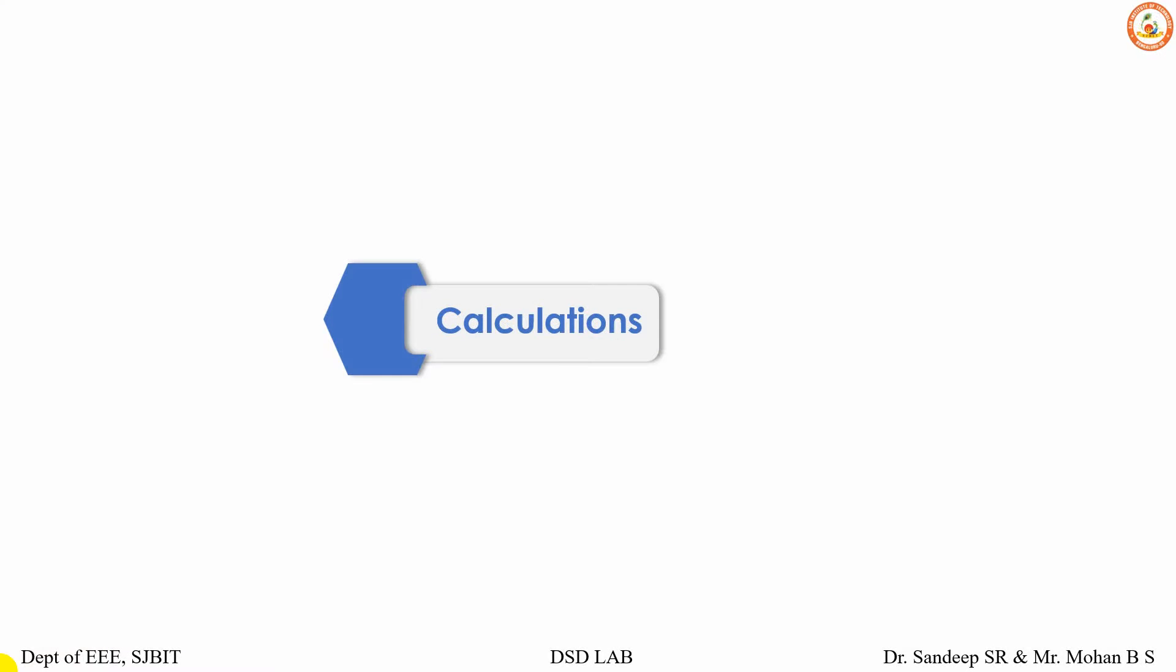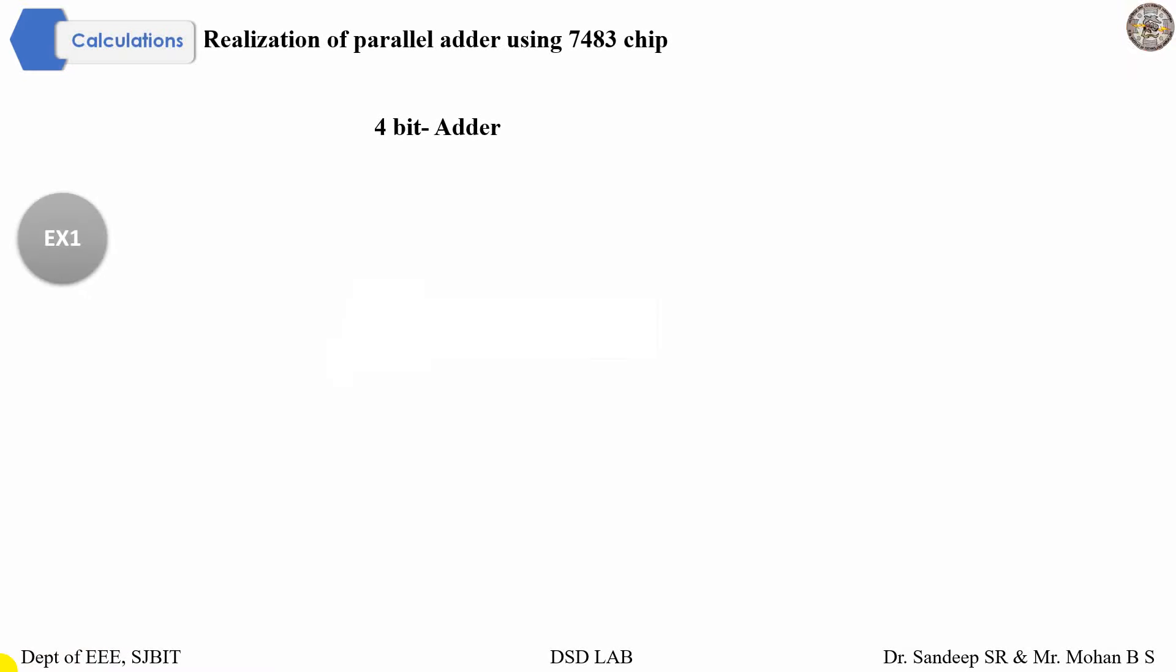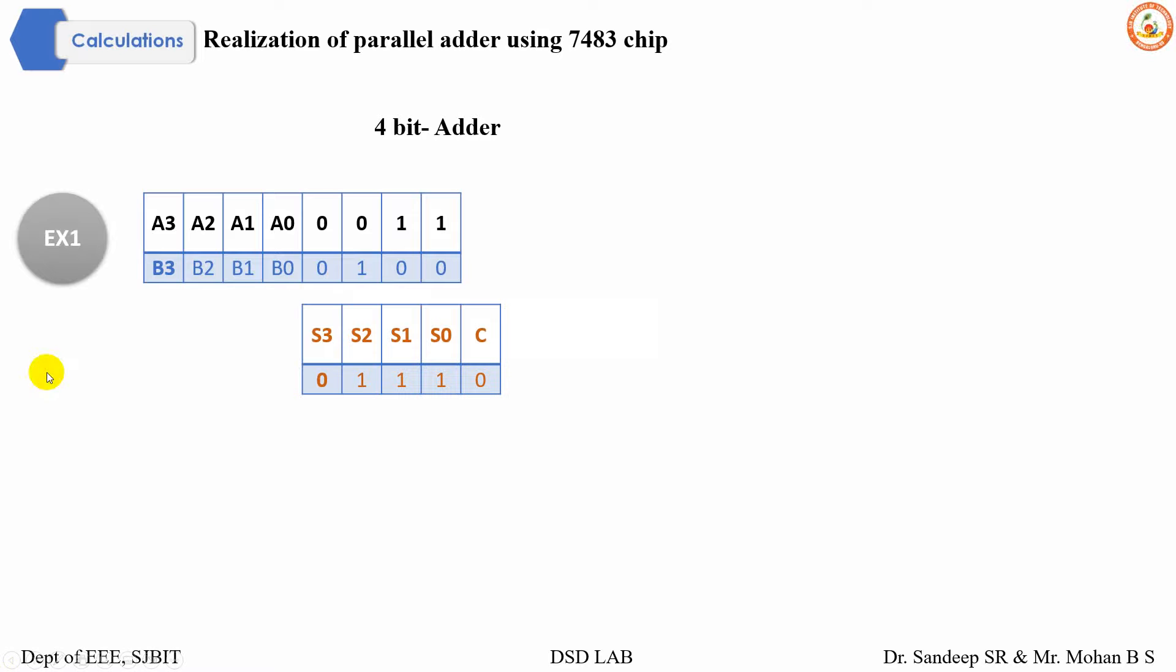Let us see simple calculations for an adder. These are the inputs, four-bit inputs, and these are the four-bit outputs. As you're aware, 1 plus 0 is 1, 1 plus 0 is again 1, 0 plus 1 is again 1, 0 plus 0 is 0, and here there's no carry, thus indicated by 0.